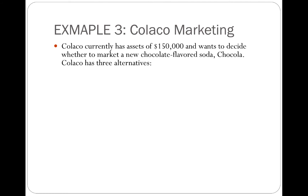To explain how we can apply utility function in the context of decision trees, I would like to go back to the very first decision tree example that we covered in class, the Colaco marketing example, which is from Winston Wayne's operations research textbook in the chapter related to decision trees and decision making under uncertainty. In this example, we learned that the Colaco company has a current asset of $150,000.